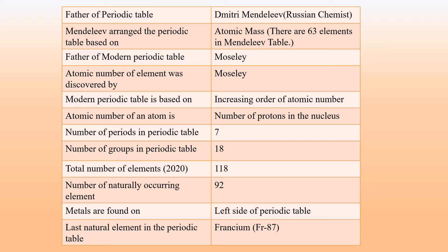The total number of elements as per 2020 is 118. The number of naturally occurring elements is 92. Metals are found on the left side of the Periodic Table and non-metals are found on the right side. The last natural element in the Periodic Table is Francium.